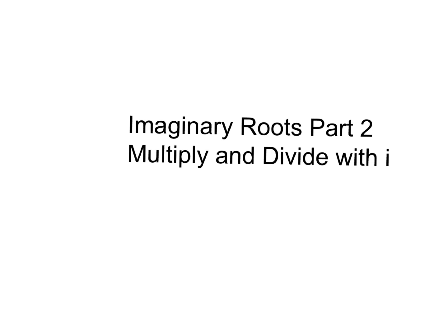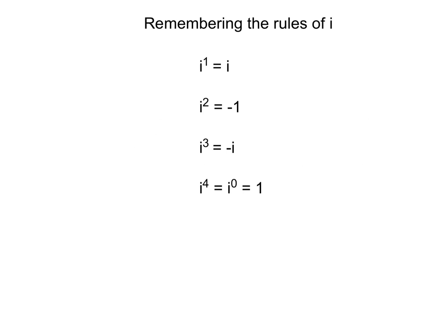Hello everyone, and welcome to part 2 of imaginary roots: multiplying and dividing with imaginary root i. Let's remember the rules. i to the first is really i, i squared is negative 1, i cubed is negative i, and i to the fourth, or i to the zeroth power, is equivalent to just 1.